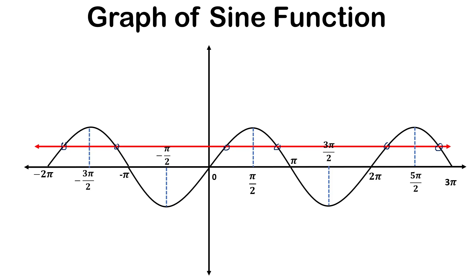As the horizontal line test states, if a horizontal line cuts a graph in more than one point, then the function is not bijective. Since this is the graph of the sine function, the sine function is not bijective and its inverse cannot be found. But we do find the inverse of the sine function, so let's now define a new function.